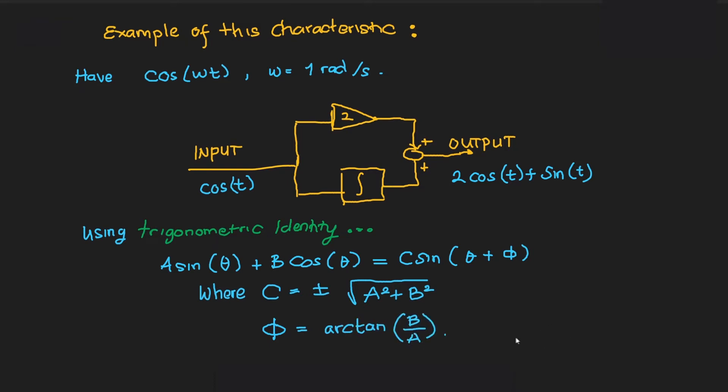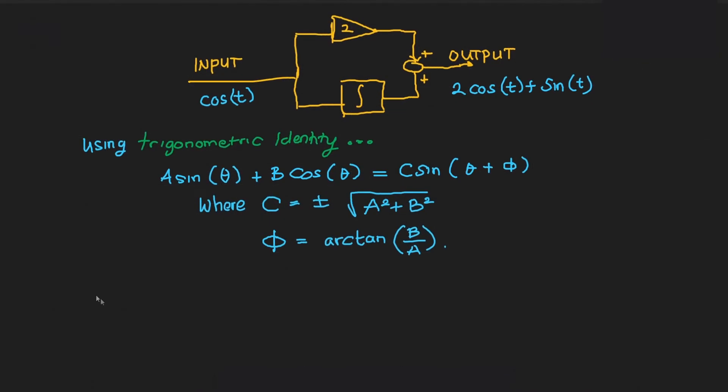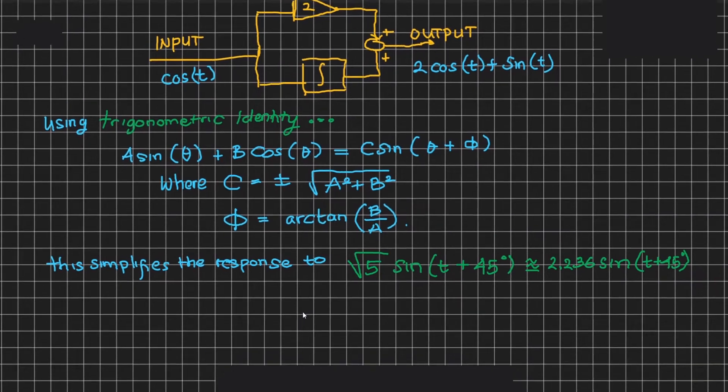This simplifies the response to √5·sin(t + 45°), which is roughly equal to 2.236·sin(t + 45°).